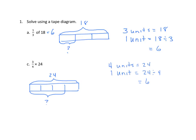We're not done because we don't want to find one unit. We have bracketed three units, so we need to go another step. So I have three units equals three times six equals 18. So my answer is 18.